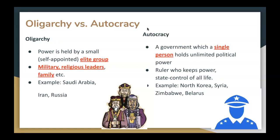An autocracy is a government in which a single person holds unlimited political power. The ruler keeps power and has state control of all aspects of life of the citizenry. Examples of autocracies include North Korea, Syria, Zimbabwe, and Belarus in Europe.